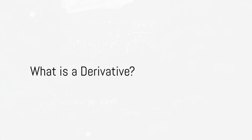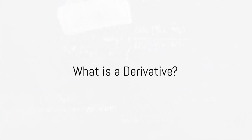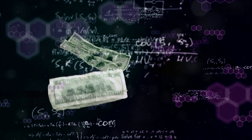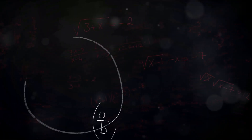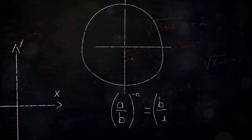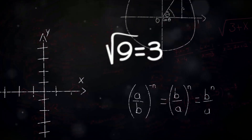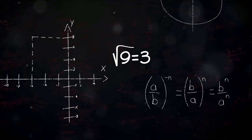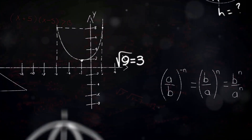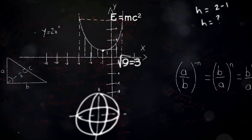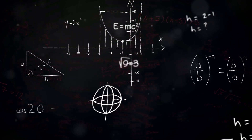First off, what is a derivative? Simply put, a derivative is a financial contract whose value depends on or derives from an underlying asset. This asset could be a stock, bond, commodity, currency, or even an interest rate.